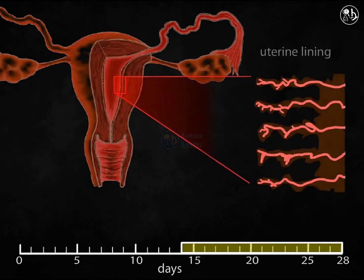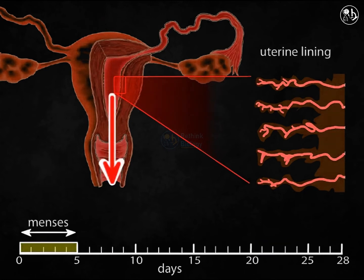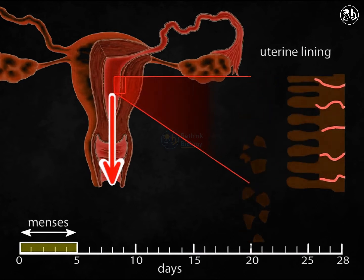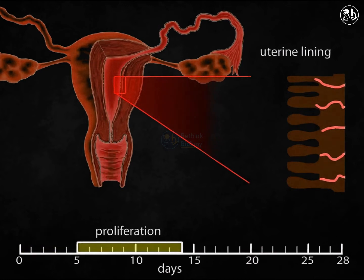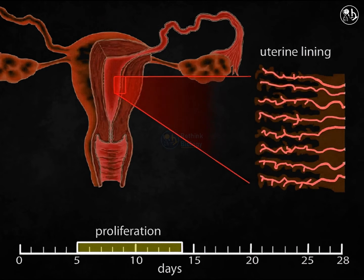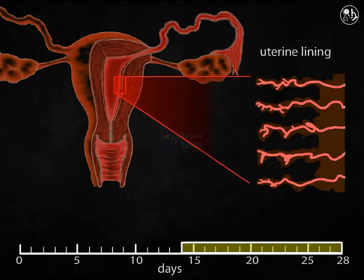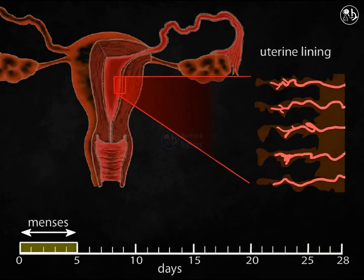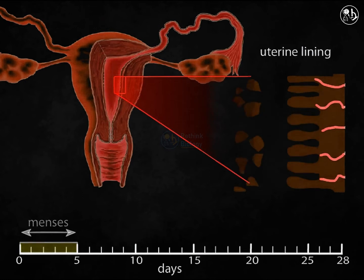The ovarian and uterine cycles are closely synchronized. Each month the uterine lining grows and subsequently sloughs off during the uterine cycle. The uterine lining sloughs off to start the cycle on the first day of menstruation. After menstruation, the uterine lining begins to develop again to prepare for embryo implantation, proliferating until ovulation. The capillary beds deteriorate just before menstruation, stop delivering nutrients to surrounding tissue, and the tissue dies and sloughs off through the vaginal canal.